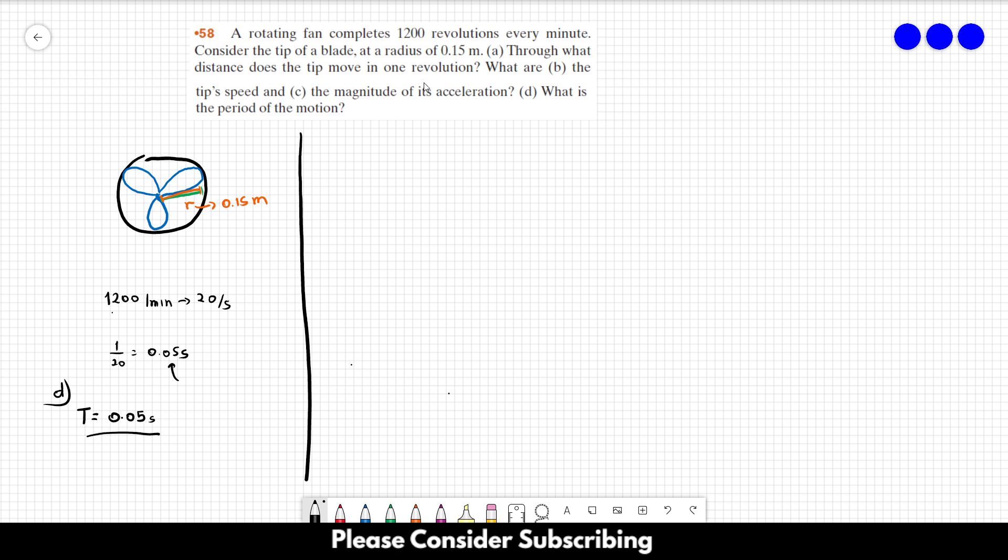For letter a: Through what distance does the tip move in one revolution? We just need to calculate the circumference over here. The circumference is 2 times pi times r, so this is going to be 2 times pi times 0.15, and this is equal to 0.94 meters roughly.